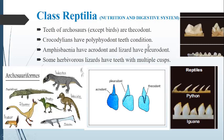The polyphyodont condition means that crocodiles have almost 80 teeth in their jaws, and they keep on changing their teeth up to 50 times in their life. When teeth are changed many times during the life of a living organism, this is called a polyphyodont teeth condition.